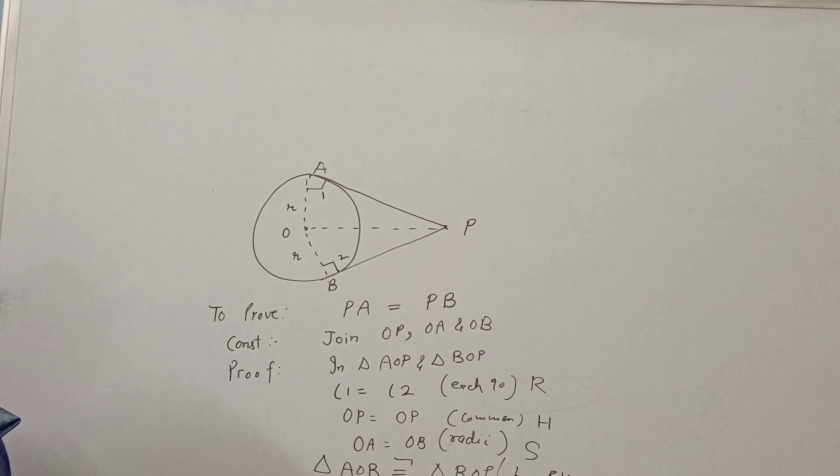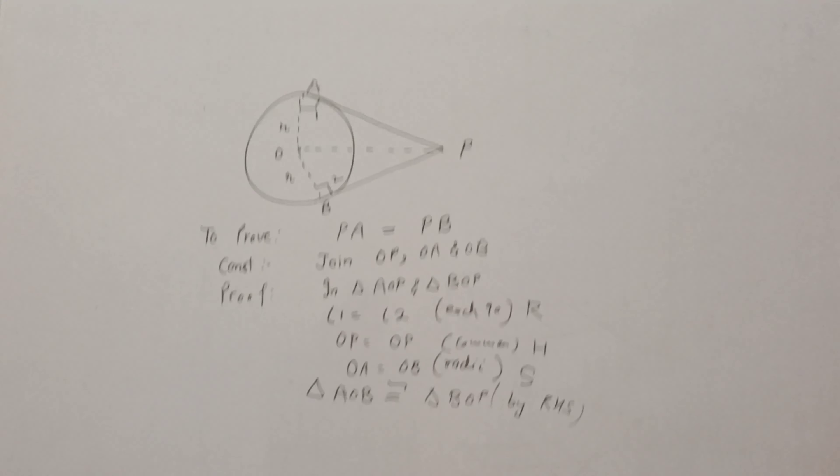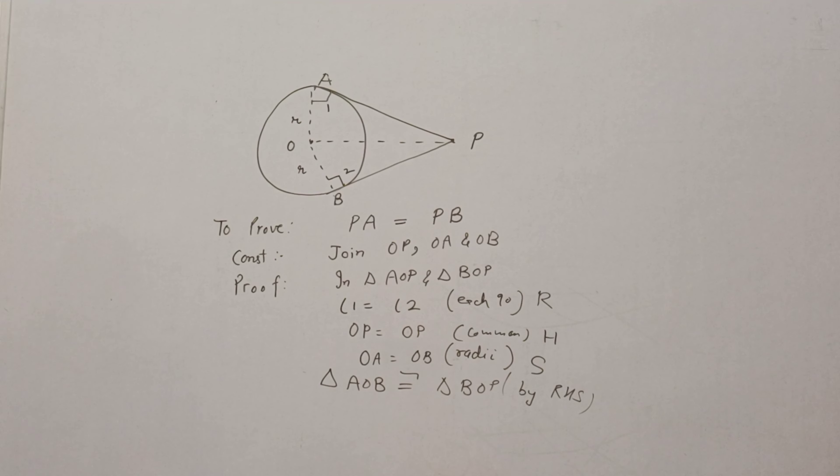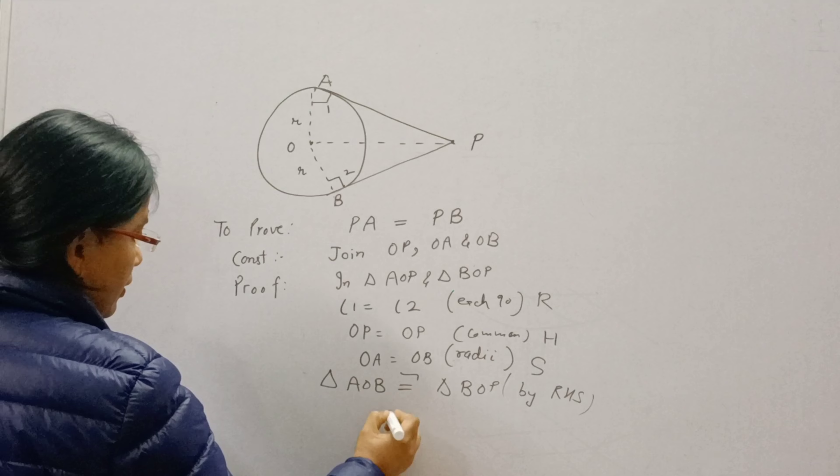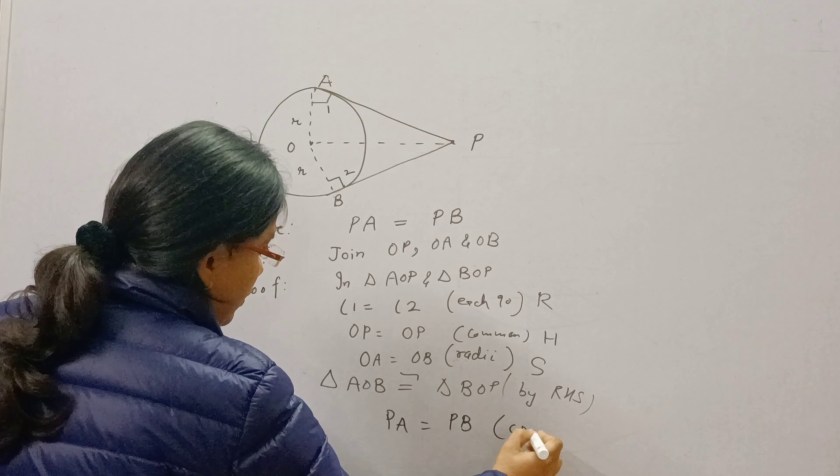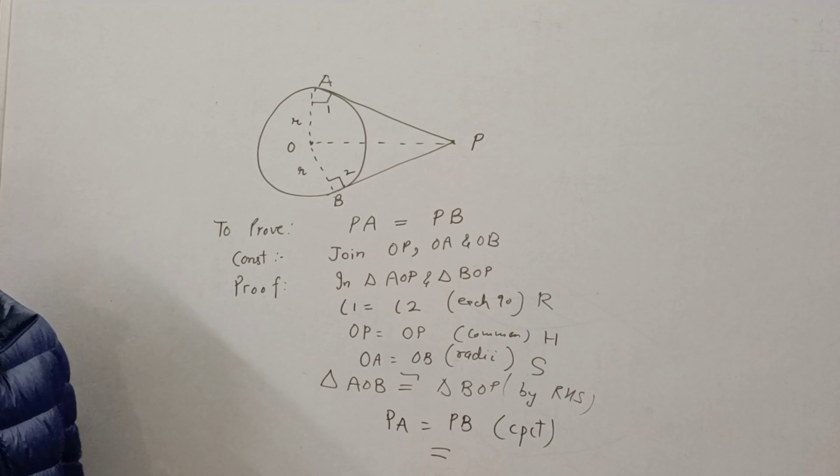And if the two triangles are congruent, then their other corresponding sides and other corresponding angles are also equal. So, we can write PA is equal to PB by CPCT, that is corresponding parts of congruent triangles. Hence, proved.